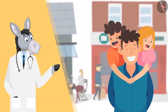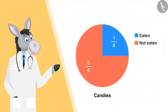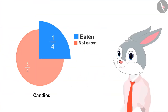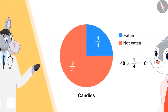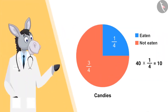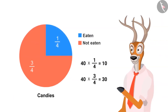Now let's look at some more examples to clear this misconception. Father of Bhimla and Chandu has bought a packet of candy containing forty candies. Look at this pie chart to find out how many candies have been eaten by the kids. They ate one-by-four, that is one-fourth of the candies. One-fourth of forty is ten. So children ate ten candies. How many candies are left? Three-fourth — that is thirty candies.